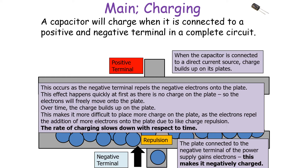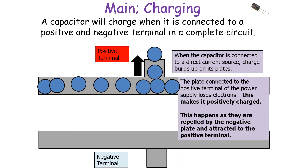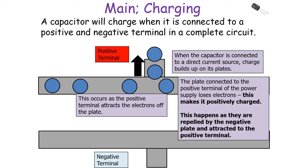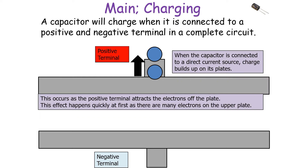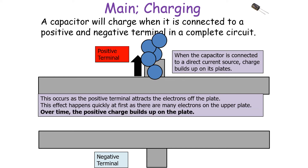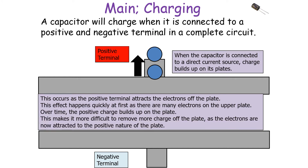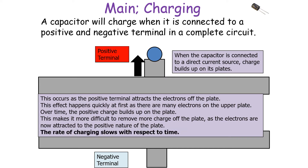So the rate of charging slows down with respect to time. The same idea applies to the positive terminal — the electrons on that positive plate are repelled by the negative plate and attracted to the positive terminal, making those electrons leave the plate. This effect happens quickly at first as there are many electrons on the upper plate, but over time the positive charge builds up on the plate and the negative charge builds up near the positive terminal, making it more difficult to remove more charge. So the rate of charging slows with respect to time.